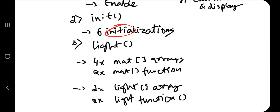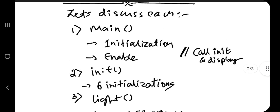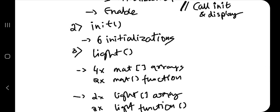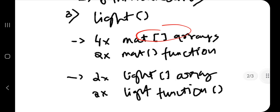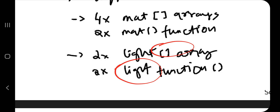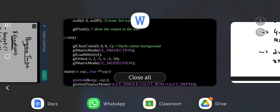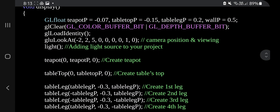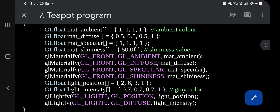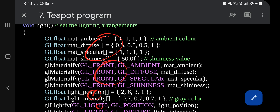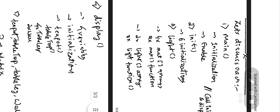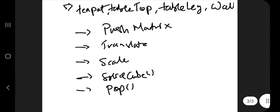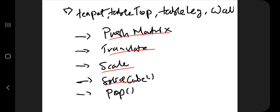In the init function there are five to six initializations: clear color, matrix mode, ortho, and matrix mode again at the end. In the light section, four material arrays and four material functions are used, plus two light arrays and two light functions. The first part is for the material and the second part is for the light.